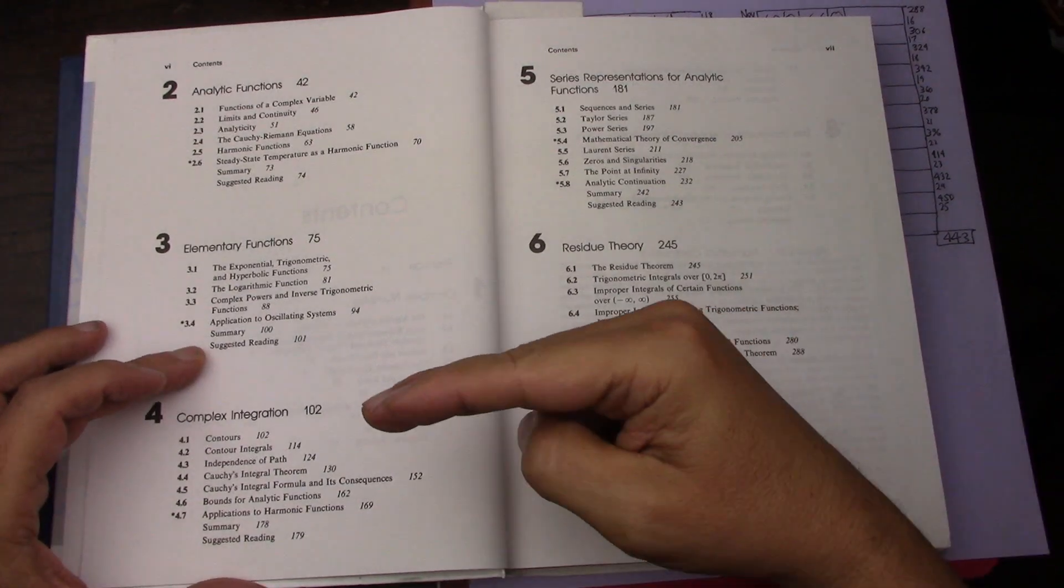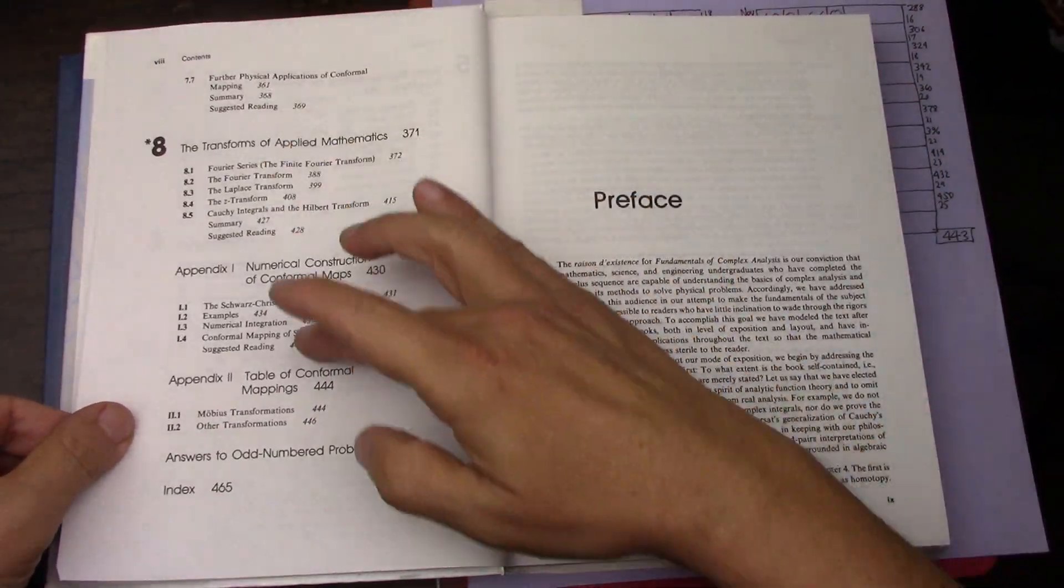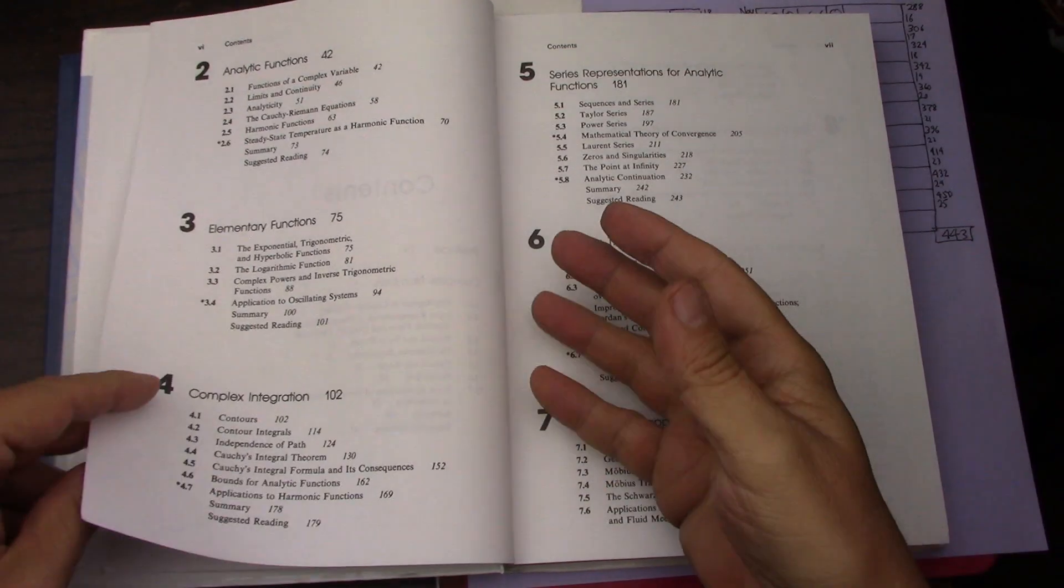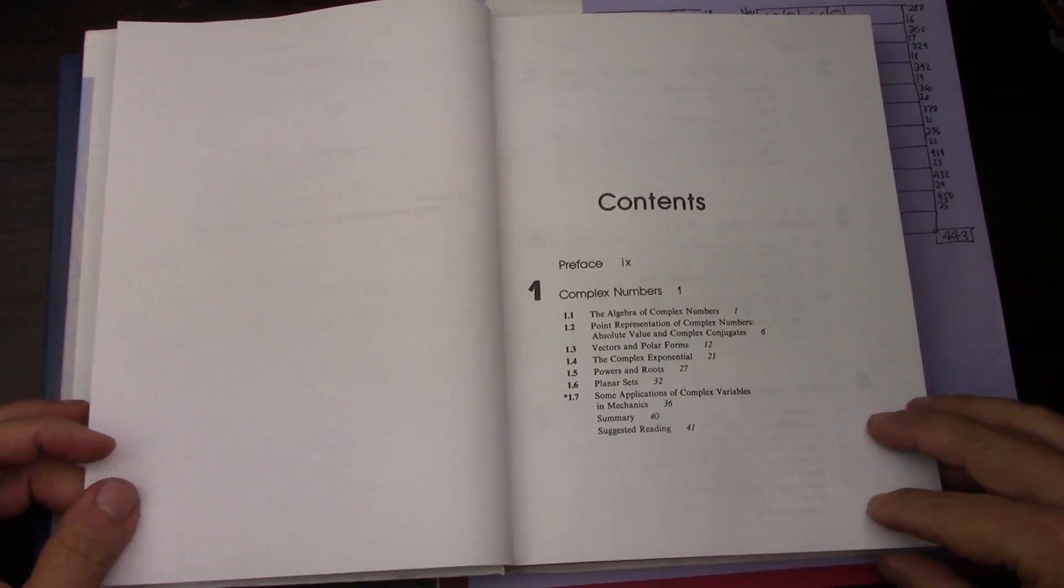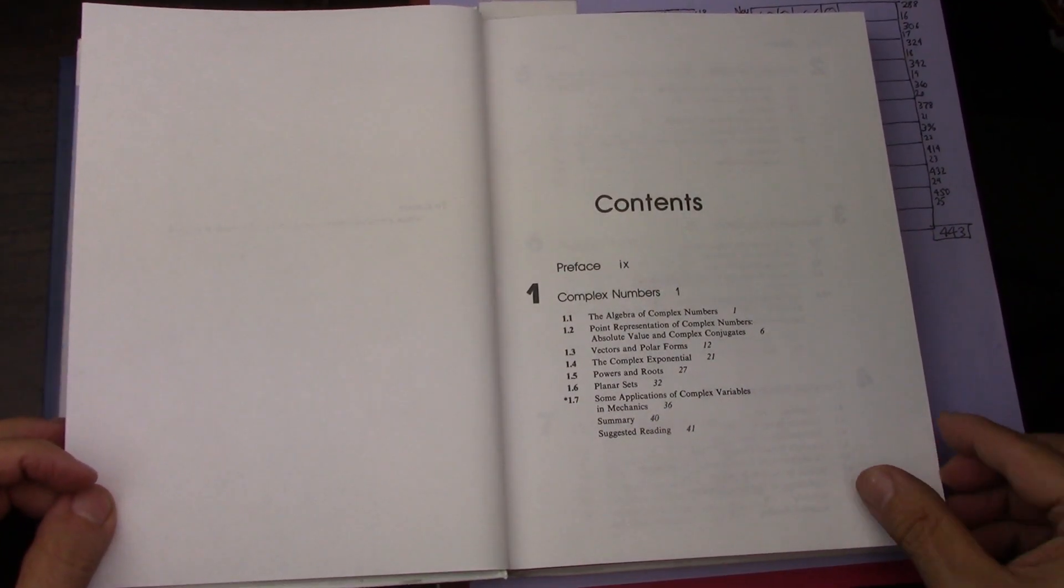Later on in the book, it's 4, 5, 6, 7, and 8. Each one of them is very big. So right now I'm making a lot of progress, but it's going to slow down.